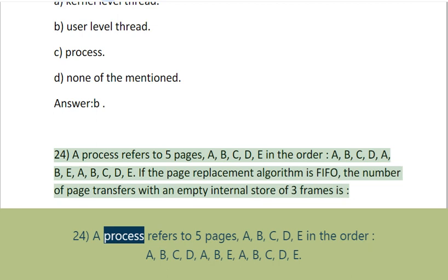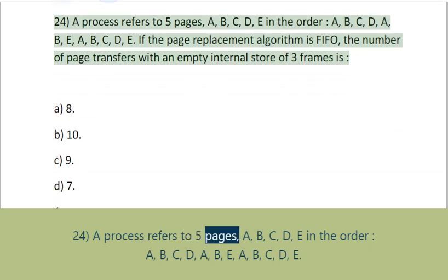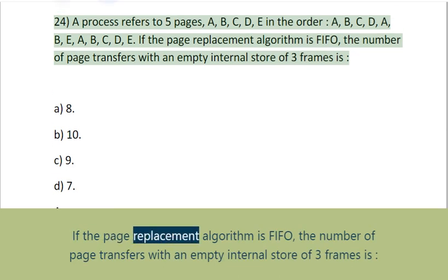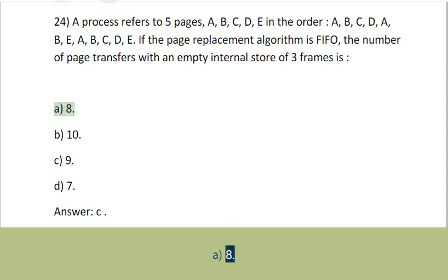Question 24: A process refers to 5 pages A, B, C, D, E in the order: A, B, C, D, A, B, E, A, B, C, D, E. If the page replacement algorithm is FIFO, the number of page transfers with an empty internal store of 3 frames is: A. 8, B. 10, C. 9, D. 7. Answer: C.